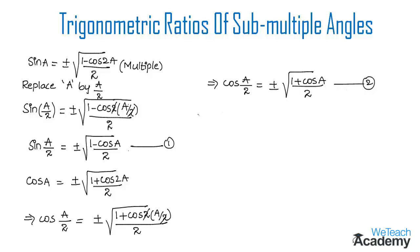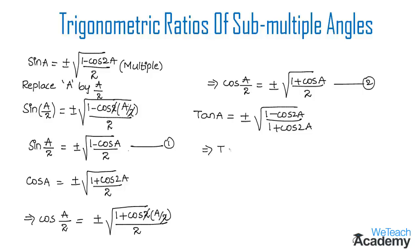Now let us consider the formula for tangent: tan(a) = ±√((1 − cos 2a) / (1 + cos 2a)), where 2a is the multiple angle. Replacing a with a/2, we get tan(a/2) = ±√((1 − cos a) / (1 + cos a)). This is the formula for the sub-multiple angle tan(a/2), and we name it equation 3.